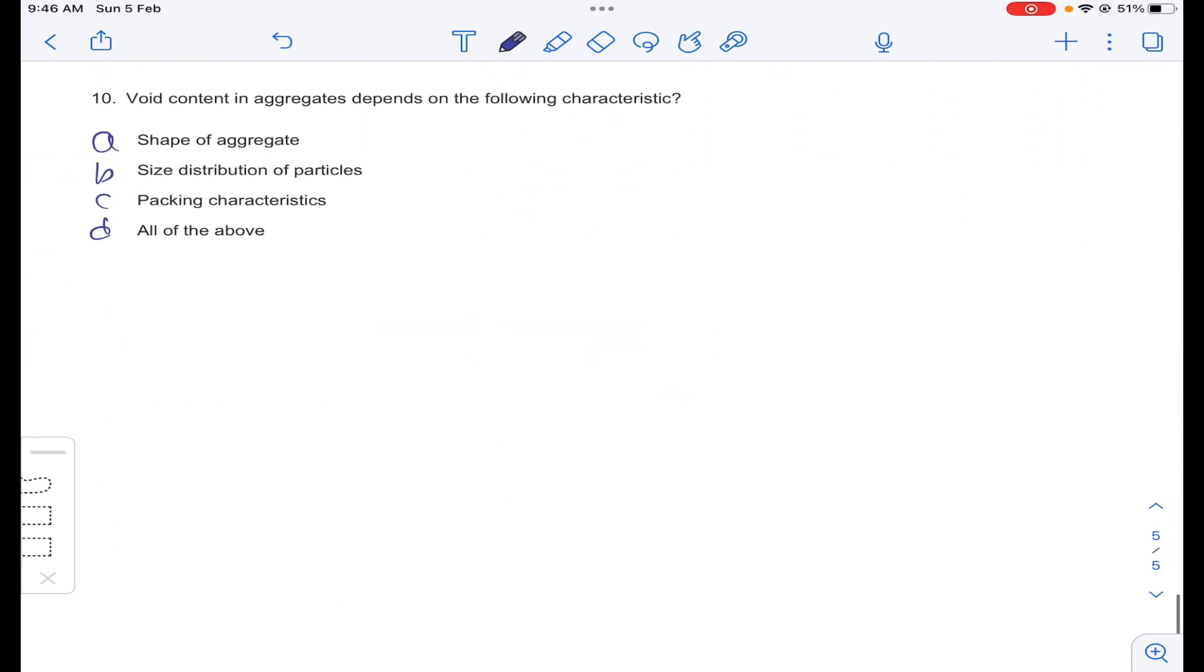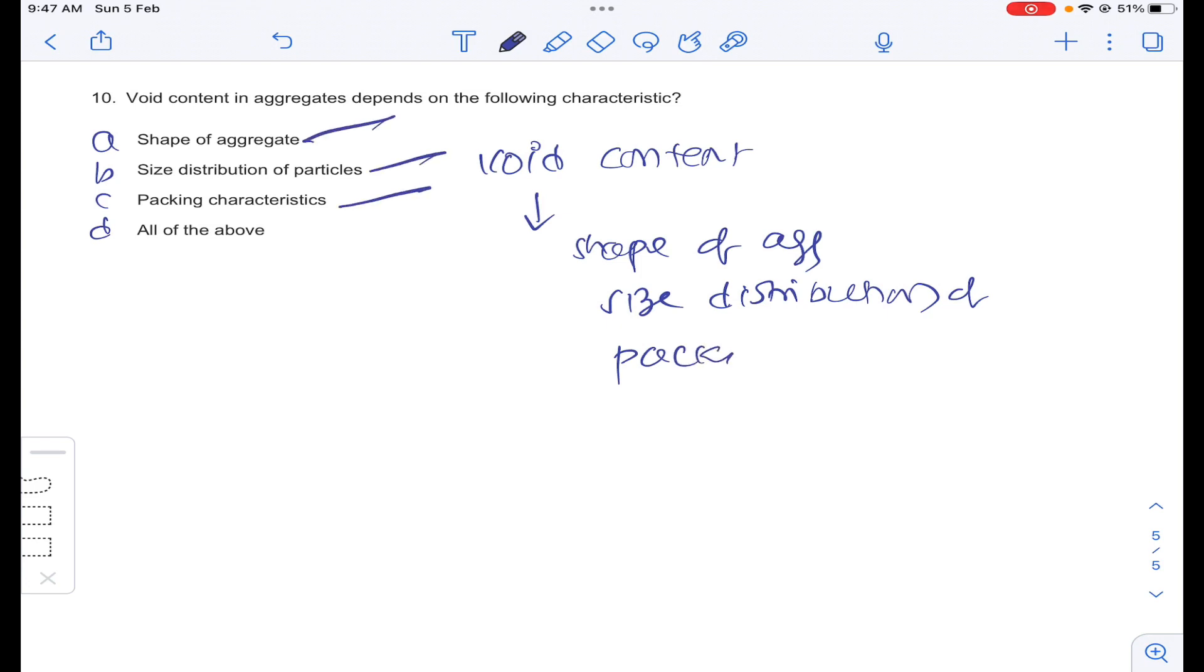Coming to last question of the assignment, void content in aggregates depends on the following characteristics. Obviously, void content depends on shape of aggregates and size distribution of particles and packing characteristics. A, B, C, all are correct. Answer D for question number 10.